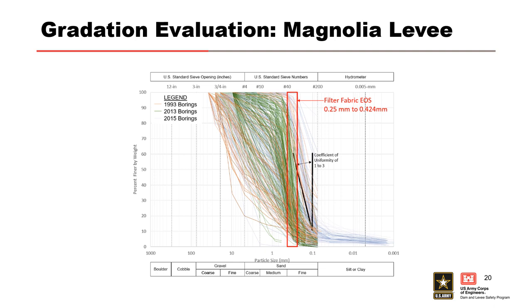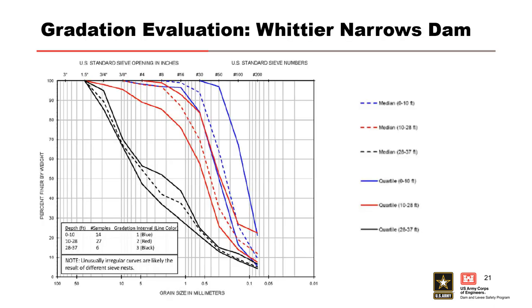Spaghetti plots of gradation data are not useful unless parsed by depth, with samples just below the roof forming material of most interest. Even that parsed data may be misleading if none of the samples are from the critical locations or weak link in the foundation. This mass gradation plot was subsequently pared down to the depths of interest and below the roof forming material. An example from Whittier Narrows Dam shows post-processing of gradation curves to concisely show median and quartile values for foundation gradations for three depth ranges, illustrating how foundation soils become more uniform near the surface.